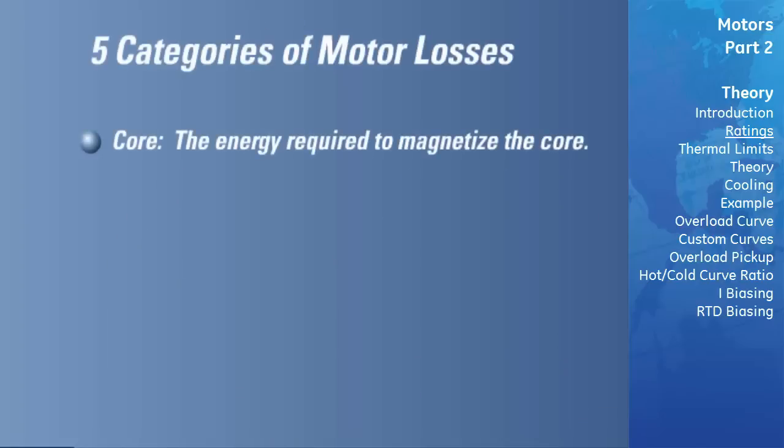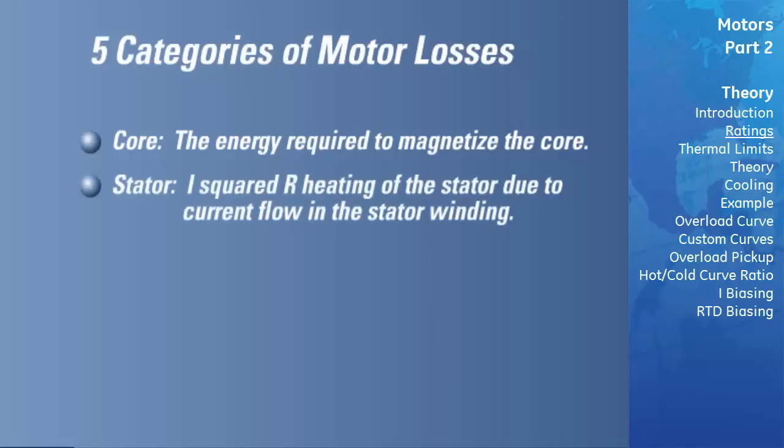Core losses are comprised of two components: the energy required to magnetize the core, and eddy current losses in the stator core. Stator losses are due to the I-squared-R heating of the stator caused by current flow in the stator windings.